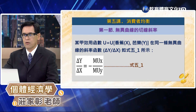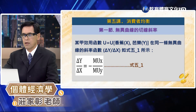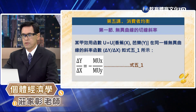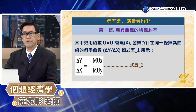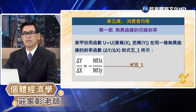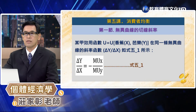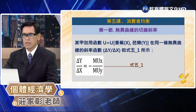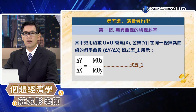我們可以觀察到模甲的效用函數 u(x,y)，在同一條無異曲線上面，像公式4-5-1所代表的就是兩種商品的邊際效用比值。這兩種邊際效用比值就是無差異曲線上面的斜率絕對值，加上一個負的符號，因為它是一條負斜率。